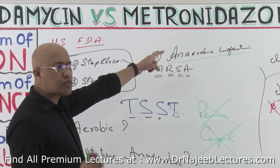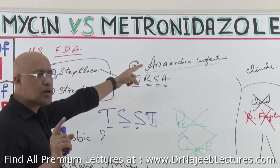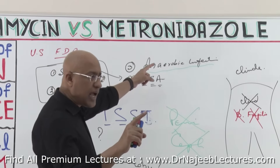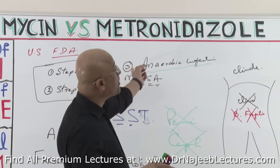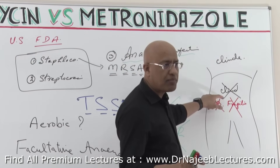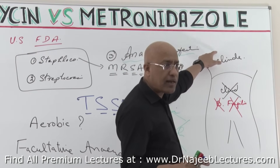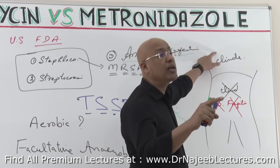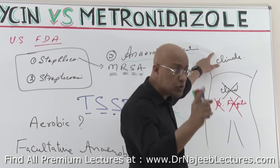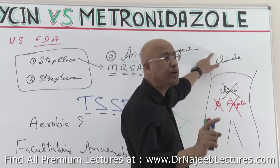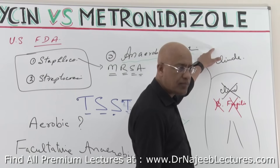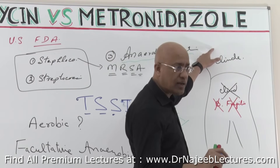Let's recap. Number one: metronidazole is strictly limited to anaerobic infections. Number two: metronidazole is preferably used below the diaphragm rather than above, because above the diaphragm in mixed anaerobic infections, aerobic organisms are also present and metronidazole fails there. If you have to use metronidazole in anaerobic infections above the diaphragm, you have to give it in combination with some other drug.